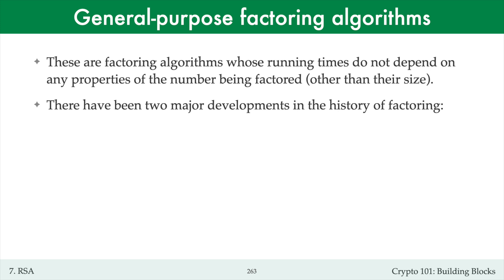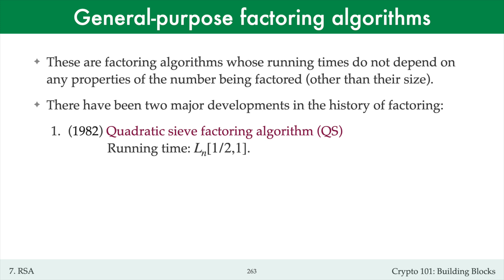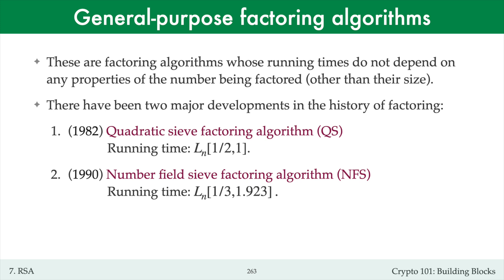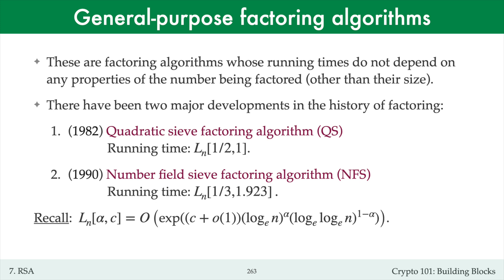There have been two major developments in the history of factoring. The first came in 1982 with the discovery of the quadratic sieve factoring algorithm (QS). This algorithm has sub-exponential running time L_n[1/2, 1]. The next major development came in 1990 with the discovery of the number field sieve factoring algorithm (NFS). This algorithm also has sub-exponential running time L_n[1/3, 1.923]. Note that the important parameter alpha has been reduced from a half to one-third, at the expense of an increase in the parameter c from 1 to 1.923.